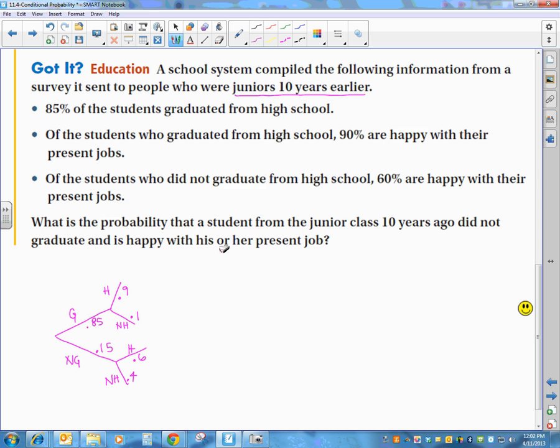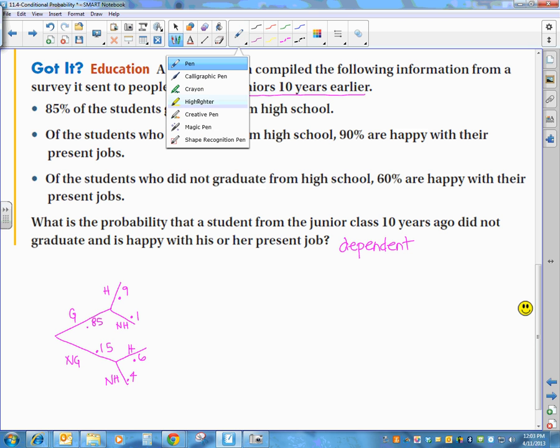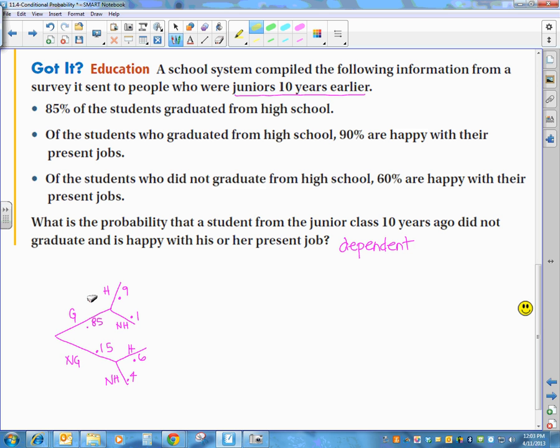Now we've got to read our problem. What is the probability that a student from the junior class 10 years ago did not graduate and is happy with his or her present job? Now, hopefully, you do realize that these two events are dependent, because our answer is dependent on whether or not they did graduate from high school. But we are also looking along this branch of our tree. Probability did not graduate and are happy. So that's the branch we're looking at.